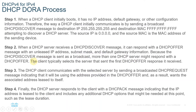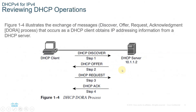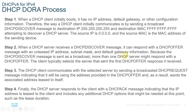Step two: when a DHCP server receives a DHCP Discover message, it responds with a DHCP Offer message containing an IP address, subnet mask, and default gateway information. Because the DHCP Discover is sent as a broadcast, more than one DHCP server might respond. The client typically selects the server that sent the first DHCP Offer response it received. The response is in unicast, but the client may get several responses if there are multiple DHCP servers.